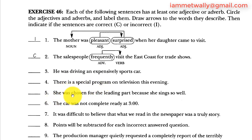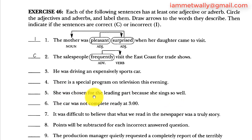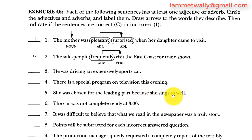Number five: 'She was chosen for the leading part because she sings so well.' She is the subject, was chosen is the passive verb. Leading is an adjective describing part. Because is a connector; she is the subject, sings is the verb. So is an adverb describing the adverb well, and well is an adverb describing the verb sings. It's correct.